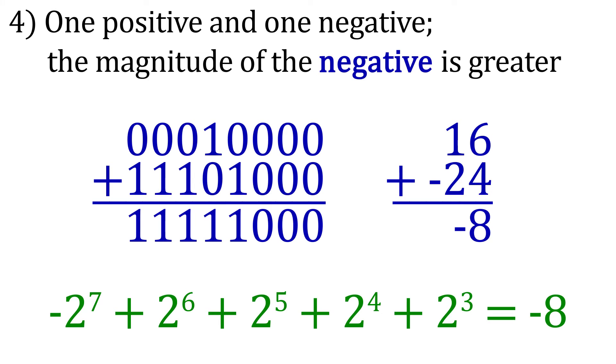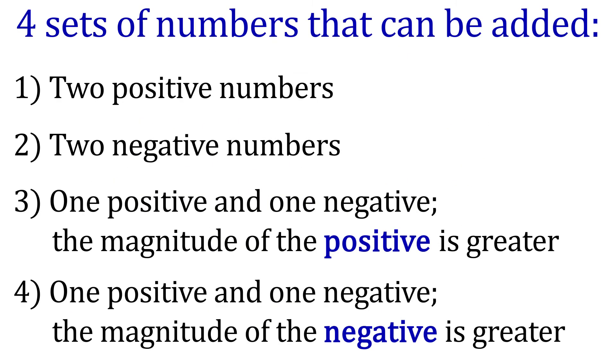Switching to a situation where the negative number has a greater magnitude, such as 16 plus negative 24, we can see that the sign bit is 1, making the number negative. Again, this is always the case when the magnitude of the negative number is greater. It is also impossible to have an overflow condition. So those are examples of how to perform addition.